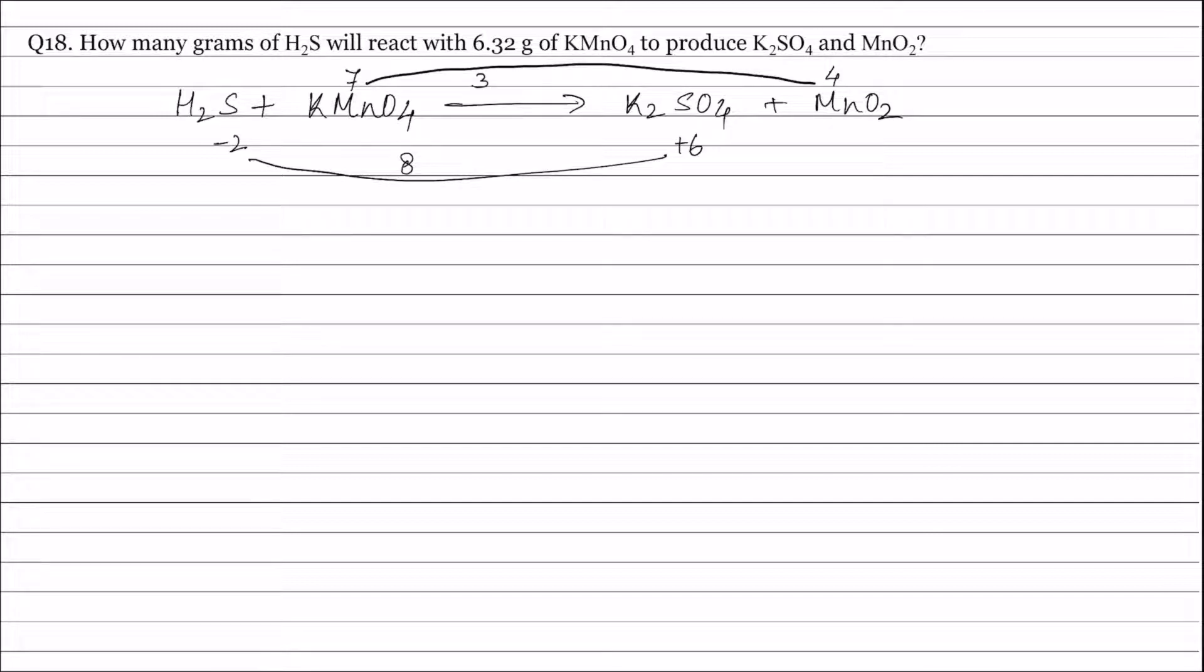Now one molecule of KMnO4 contains one atom of manganese or one mole of KMnO4 contains one mole of manganese. Therefore change in oxidation number of KMnO4 is 3 or we can say valency factor is 3.